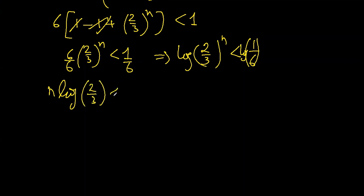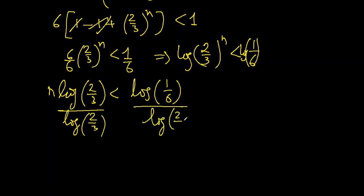So it becomes n·log(2/3) is less than log(1/6). Let's divide both sides by log(2/3). Log(2/3) is negative, it's less than 1, so it will definitely be negative.